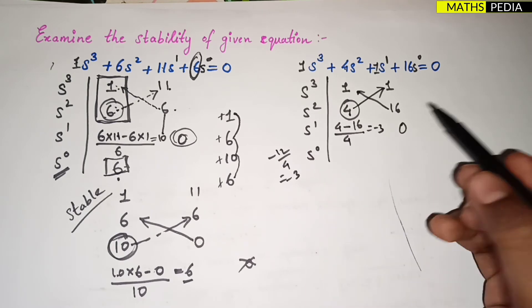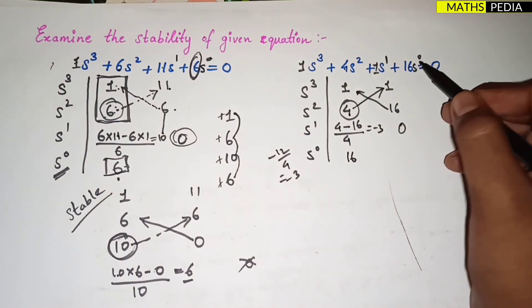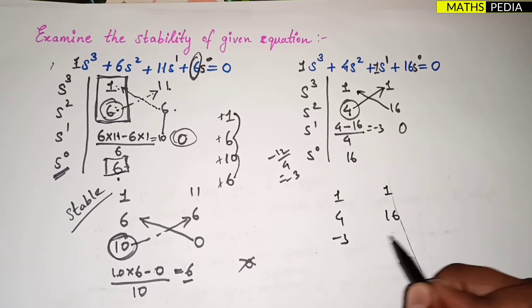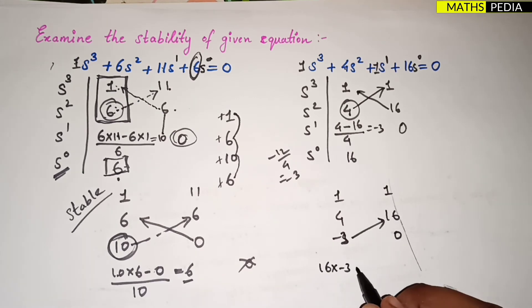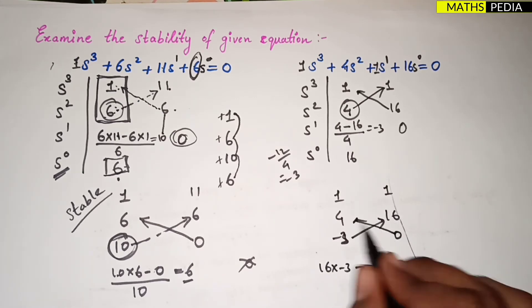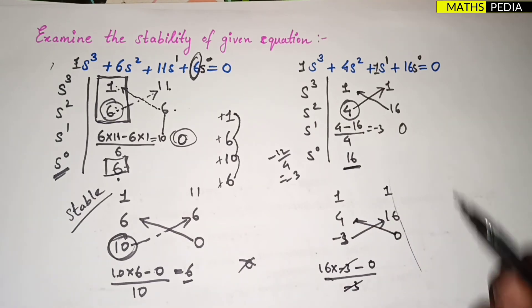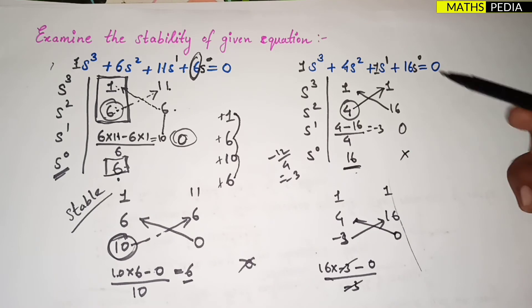The s⁰ row can be written directly as 16, the coefficient of s⁰ in the original equation. You can verify: (16 × −3 − 0 × 4) / −3 simplifies to 16, confirming the result. So the completed first column is: 1, 4, −3, 16.